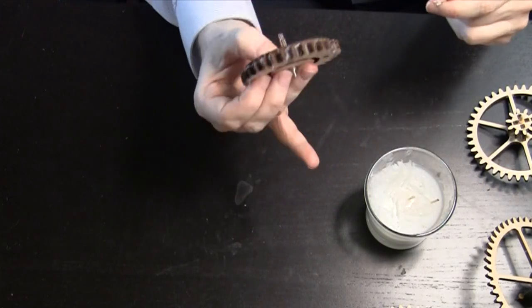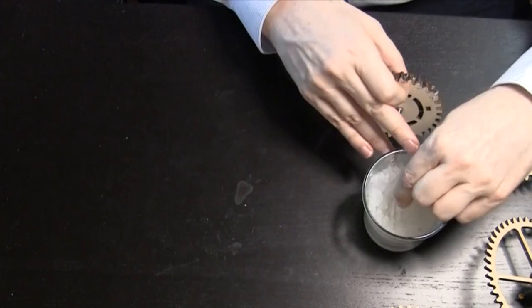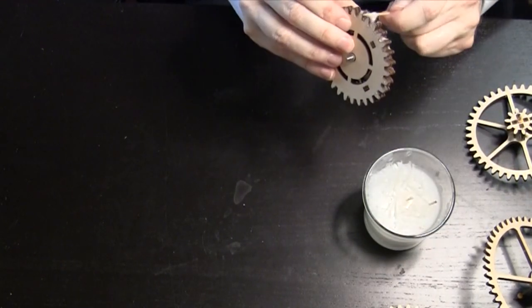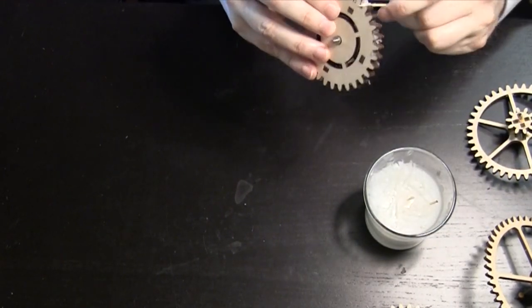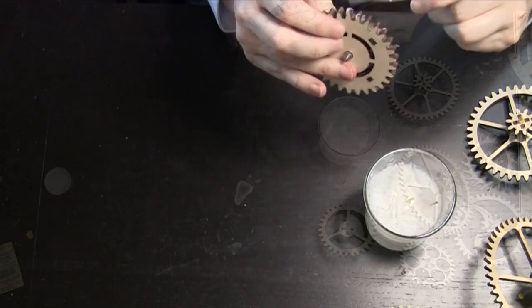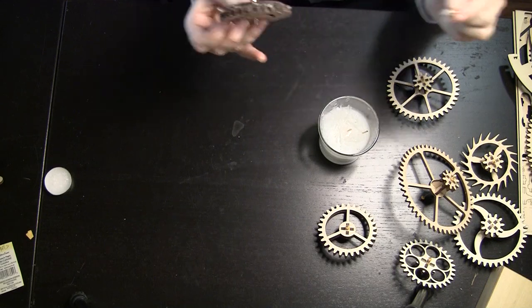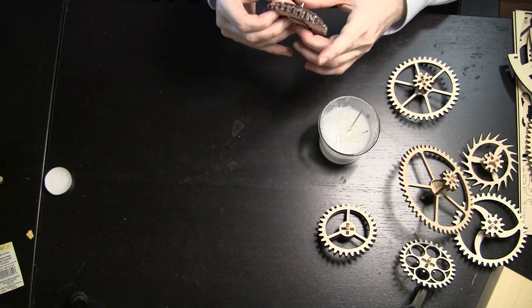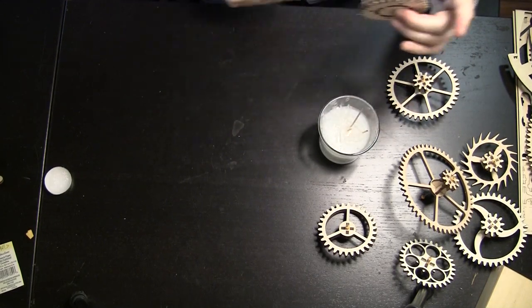There we go. Done with all the troughs. Now, to do a quick run across the top to make sure I didn't miss anything. Okay. Do this on all the other 8 or 9 gears and then you are ready to put them together.